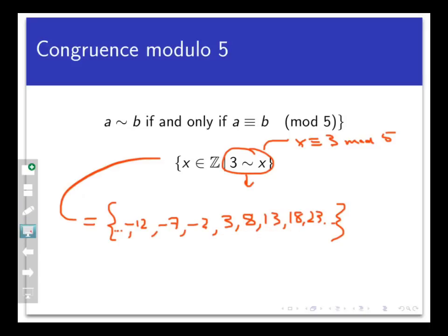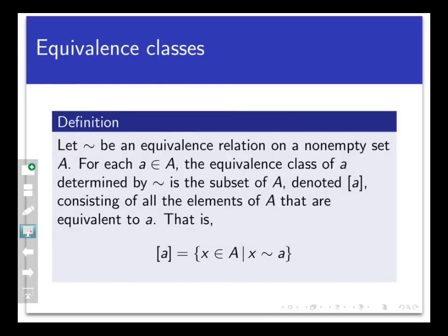So both examples we've seen here involve taking an equivalence relation on a set and an element out of that set, and asking what is the set of all objects that are equivalent to the element that I chose? What's the set of all words that rhyme with book? What's the set of all integers that are congruent to 3 mod 5? The general concept here is what's known as an equivalence class. We define this as follows.